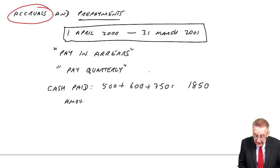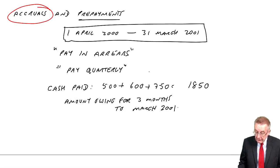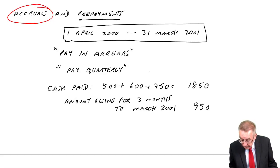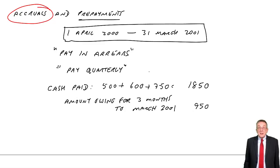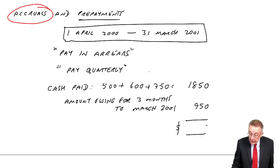The amount owing — he's been using the telephone, he does owe money, and even though he hasn't had the bill, we're told he's estimated he owes 950. That was the cost of the last three months. And so the total expense for the whole 12 months is 2800.